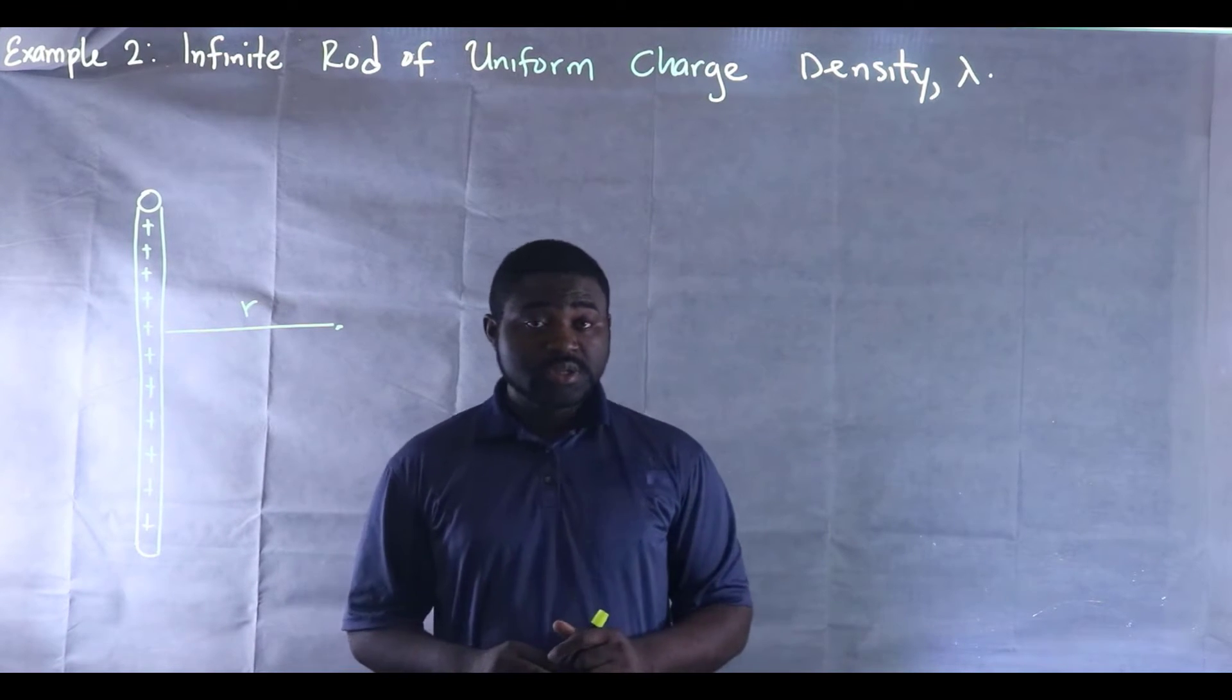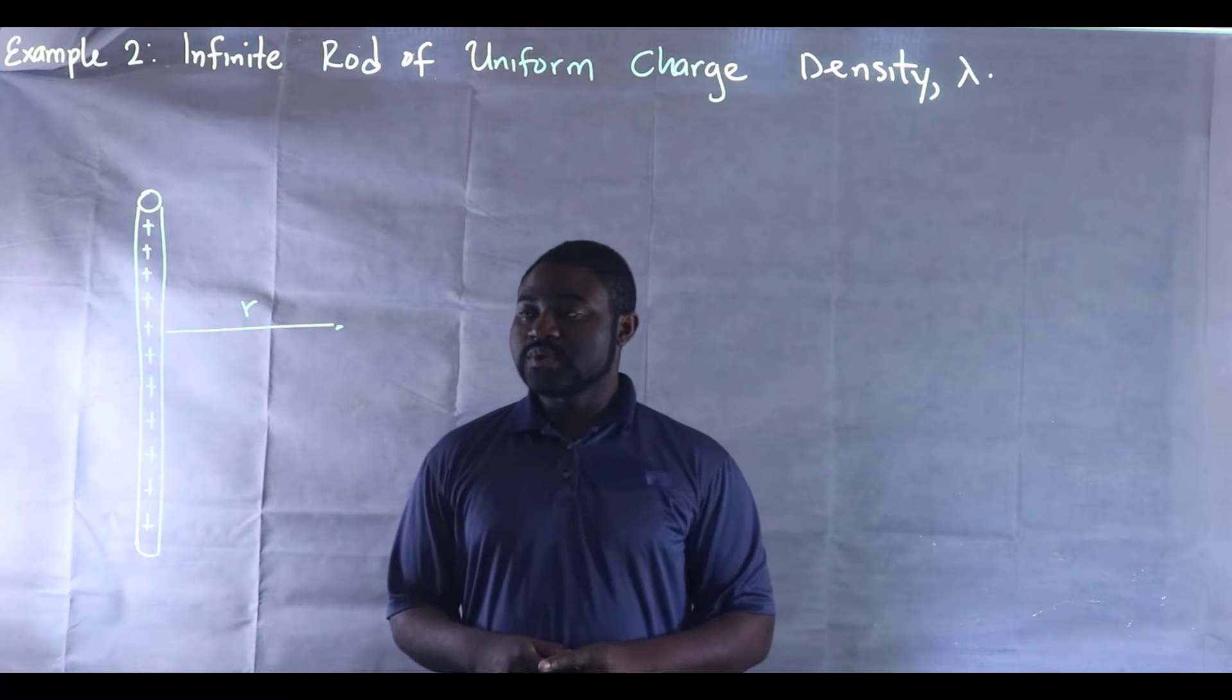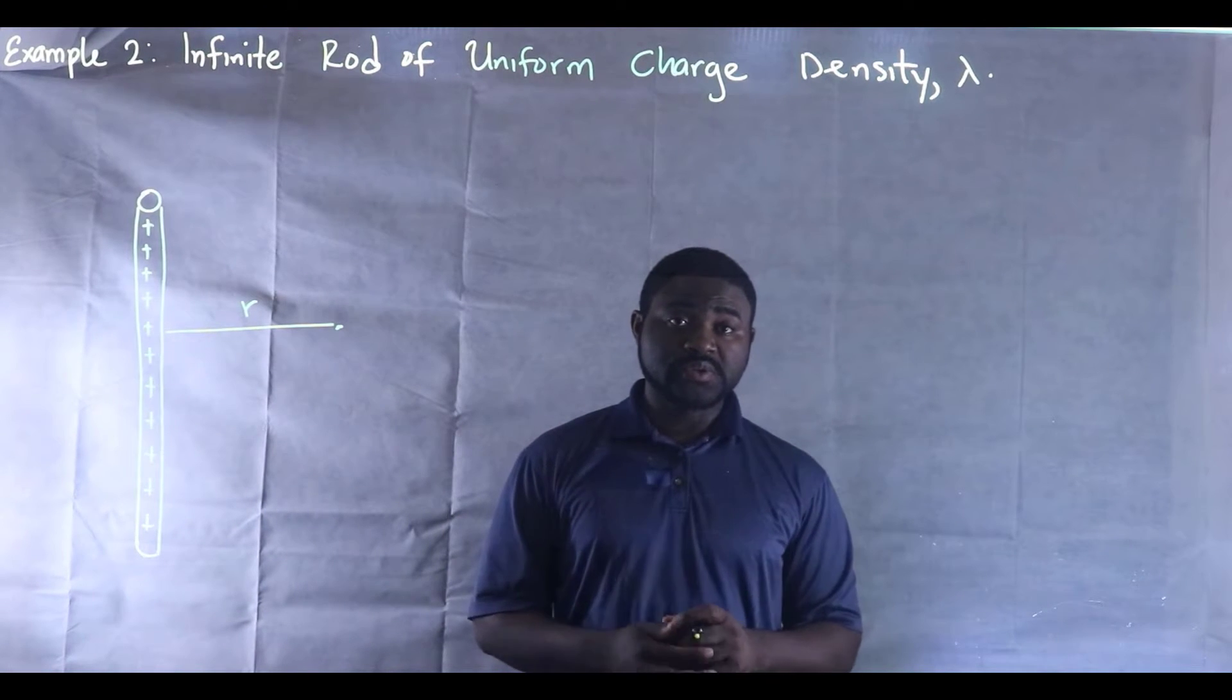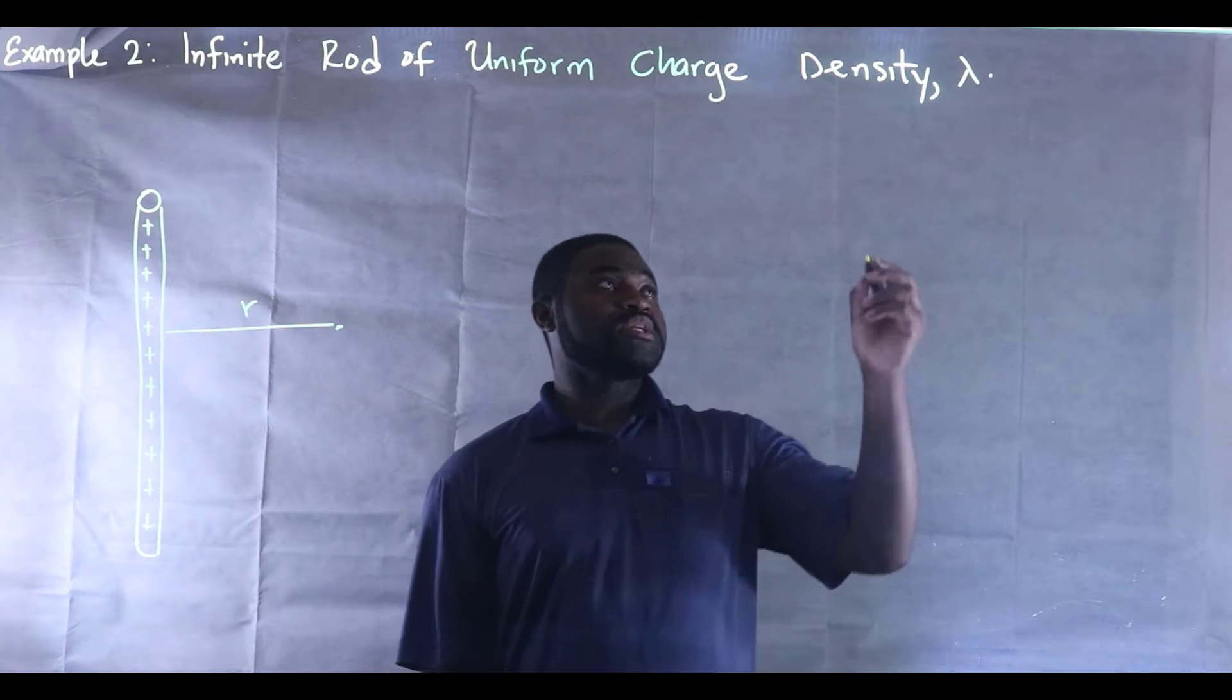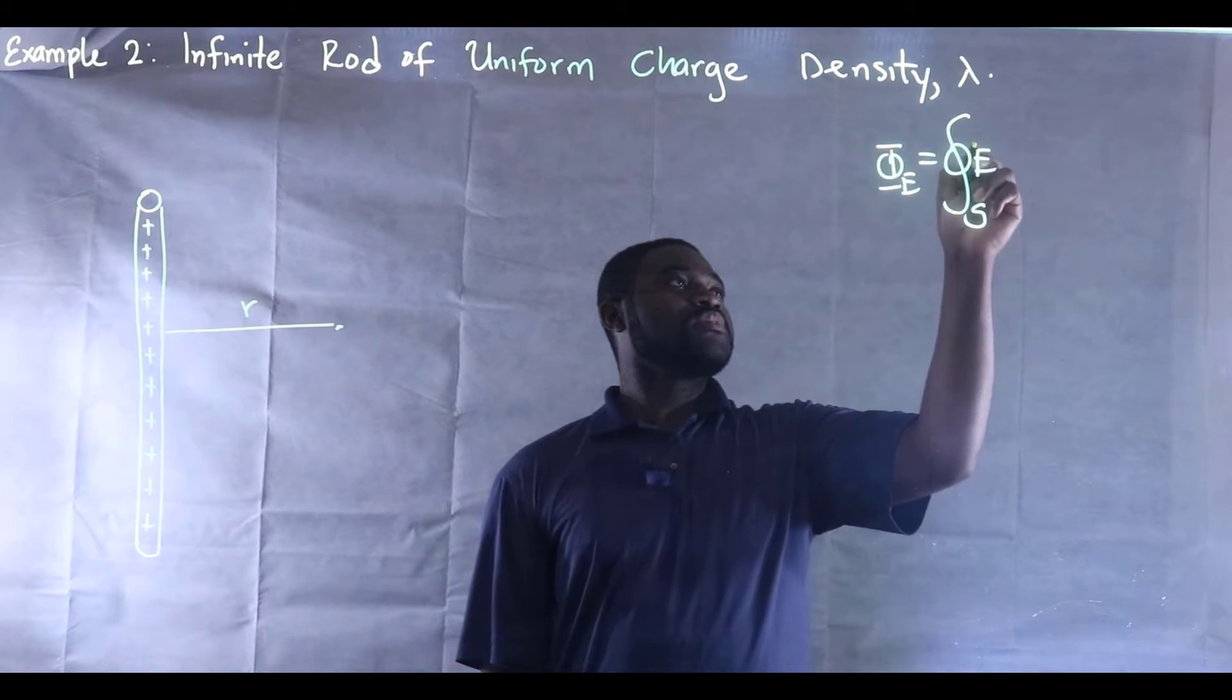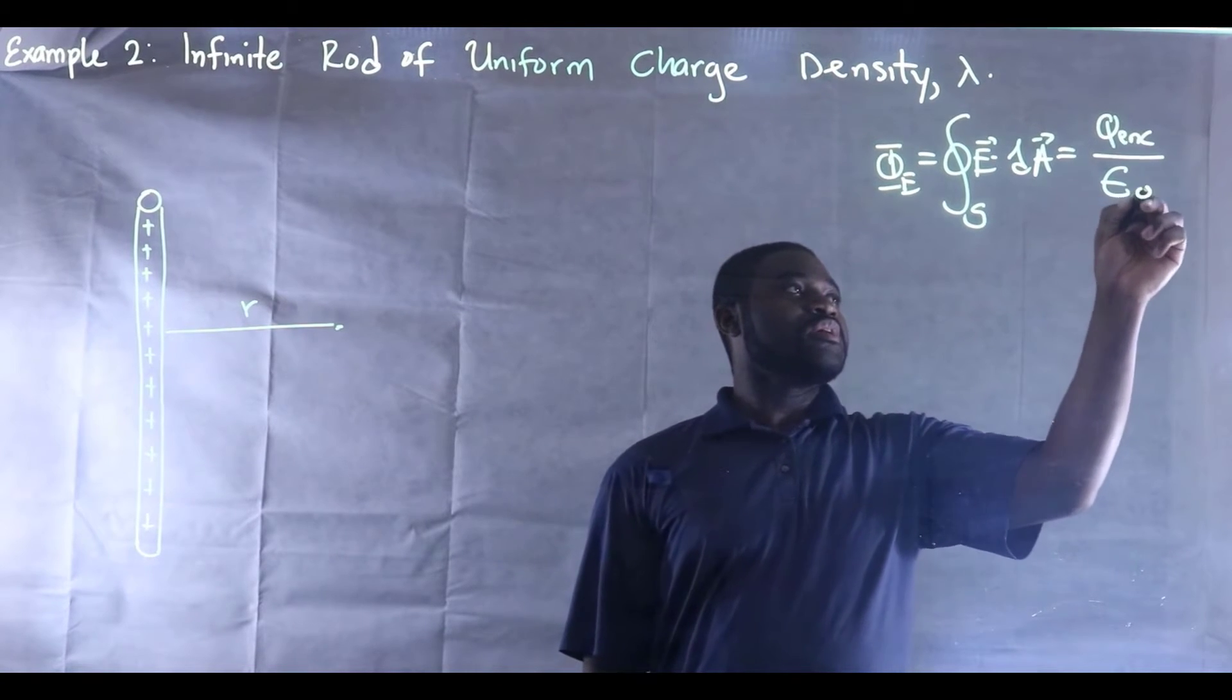It is my pleasure to introduce to you a very remarkable way of solving this problem. We are required to calculate the electric field generated by a positively charged rod at a certain distance r. Now we are going to employ Gauss's law. What is Gauss's law? Gauss's law basically states that the flux through any surface S is equal to the charge enclosed by that surface divided by epsilon-not.